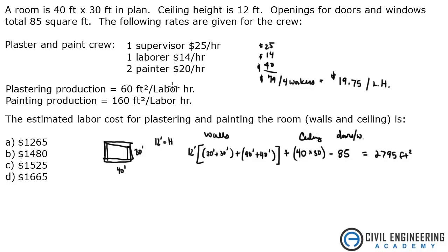Okay, so now that we know that, let's go ahead and figure out our production. So we've got a total square footage here. Let's figure out how our production plays a role in that, how fast we're going to finish that, and then we'll just multiply it by how much it is per labor hour and add it all up. So plastering, we've got 2795 square feet divided by 60. Okay, that gives me 46.58. Multiply that by our $19.75 per hour, and I get $920.02 for plastering.